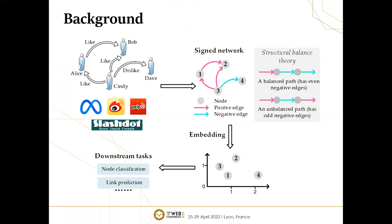First, I'd like to introduce some background knowledge about signed network embedding. Compared with traditional plain networks, signed networks contain edges with positive or negative weights. We can use them to model real applications such as a trading platform with trust ratings or a social network with friendship or antagonism.